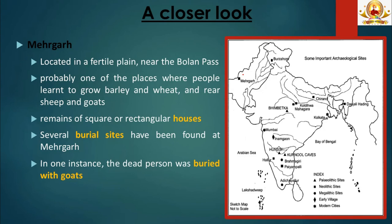Let us have a closer look at one Neolithic site — Mehergarh. This site is located in a fertile plain near the Bolan Pass, one of the most important routes into Iran. Mehergarh was probably one of the places where women and men learned to grow barley and wheat, and rear sheep and goats — one of the earliest known villages. Archaeologists found bones of wild animals like deer and pig in earliest levels, more sheep and goat bones in later levels, and cattle bones most common in still later levels, suggesting cattle became the primary kept animal. Other finds include square or rectangular houses with four or more compartments, some used for storage.